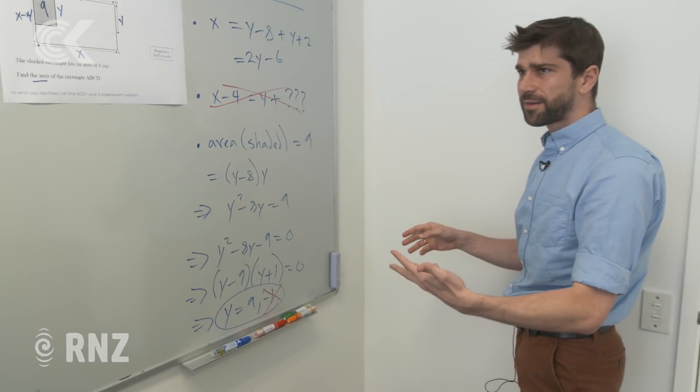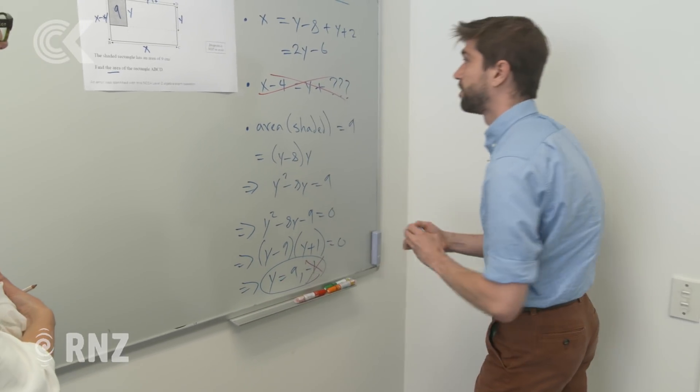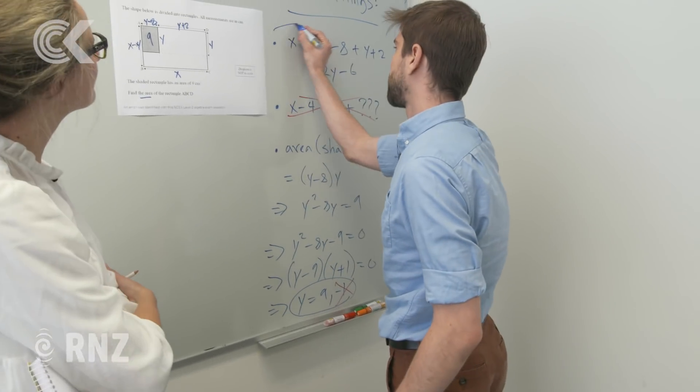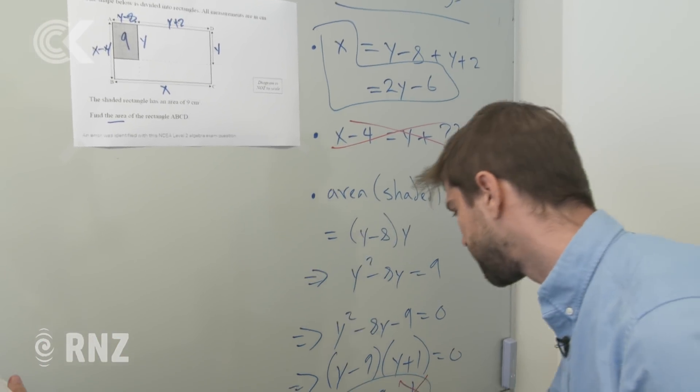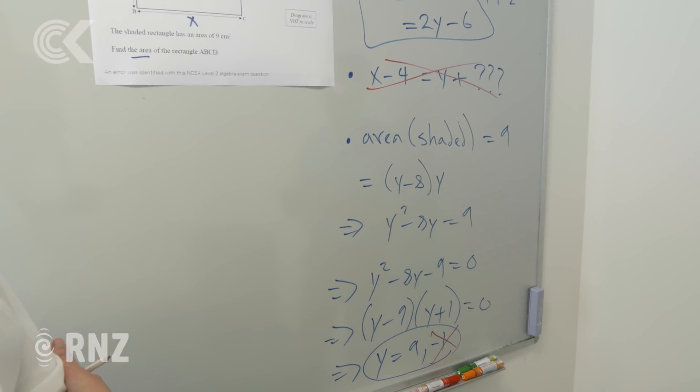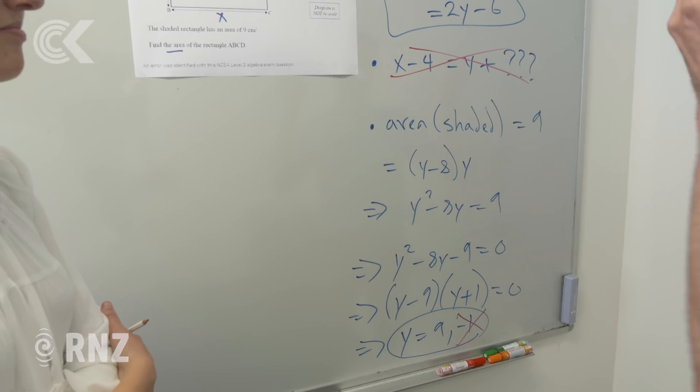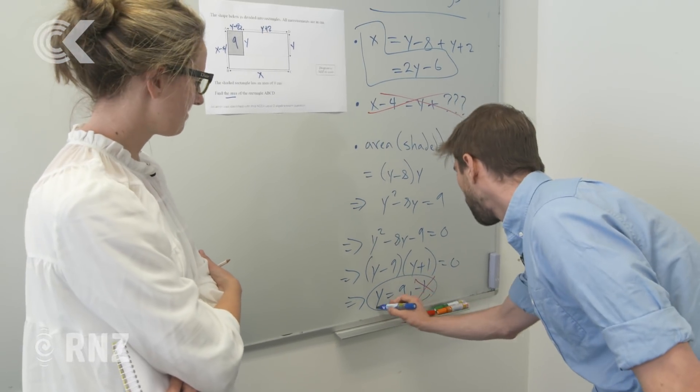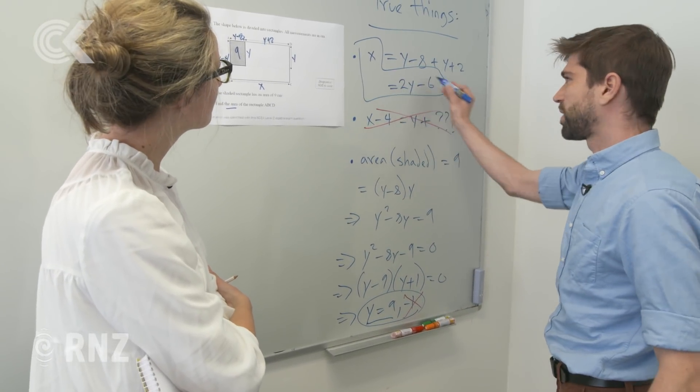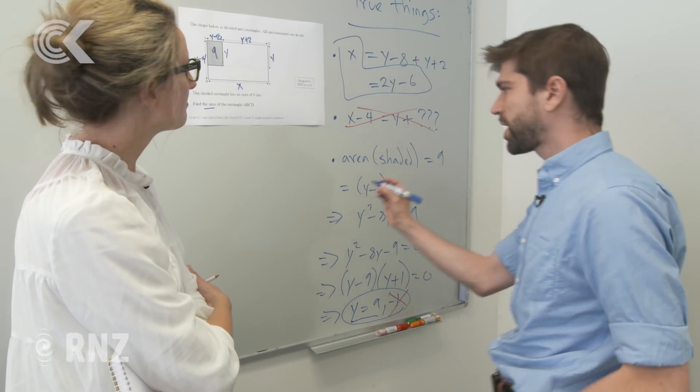And so we've learned something here, right? So we're making progress. So we've got x is 2y minus 6. This is a dead end. And y is 9. These are the three things we have to do so far. And from this, you're pretty much home free, right? Like if you know y is 9, you know x is related to y, you should know what x is.